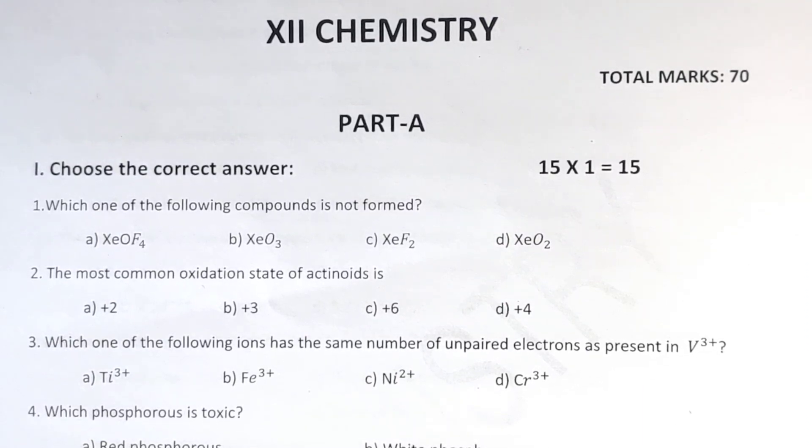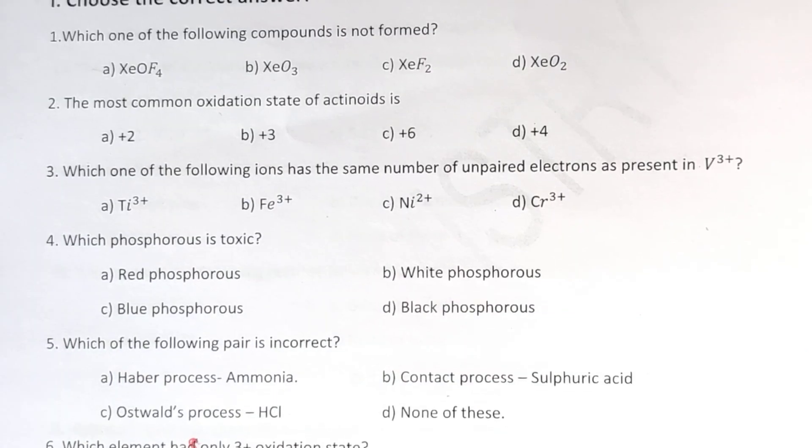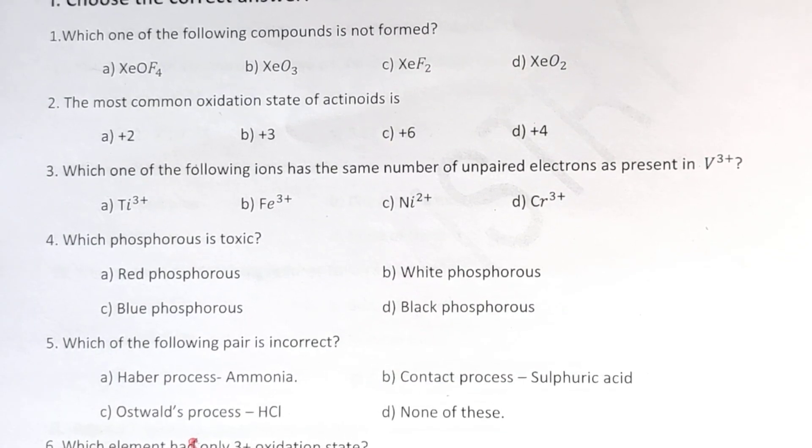First, choose the correct answer, 15 questions. Which one of the following compounds is not formed? Second one, the most common oxidation state of actinoids is. Third one, which one of the following ions has the same number of unpaired electrons as present in V³⁺? Fourth one, which of the following allotropes of phosphorus is toxic?